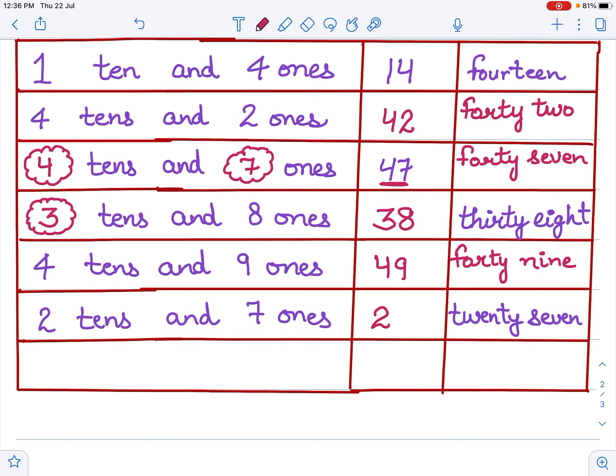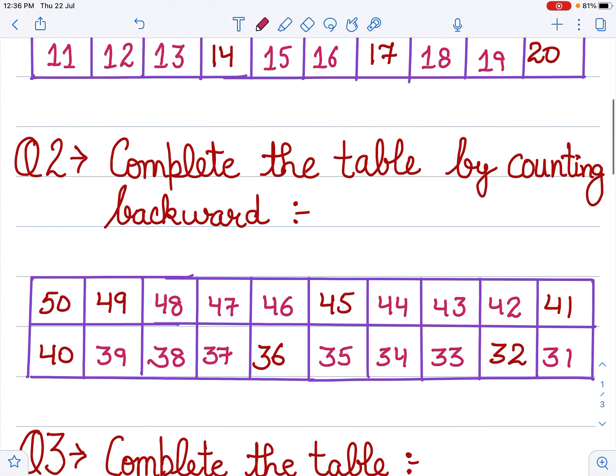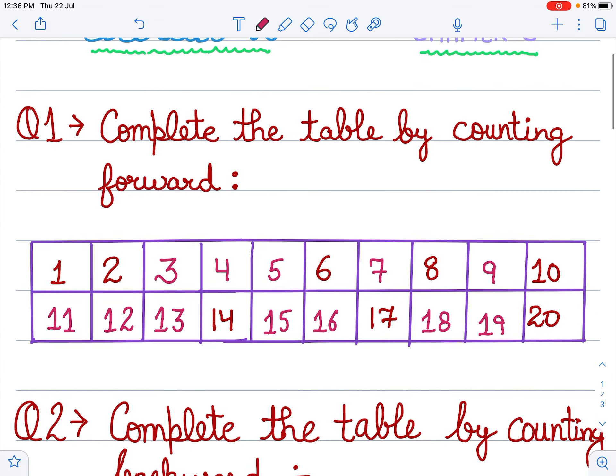Next is two tens and seven ones, 27. 27 is also complete in words for us.